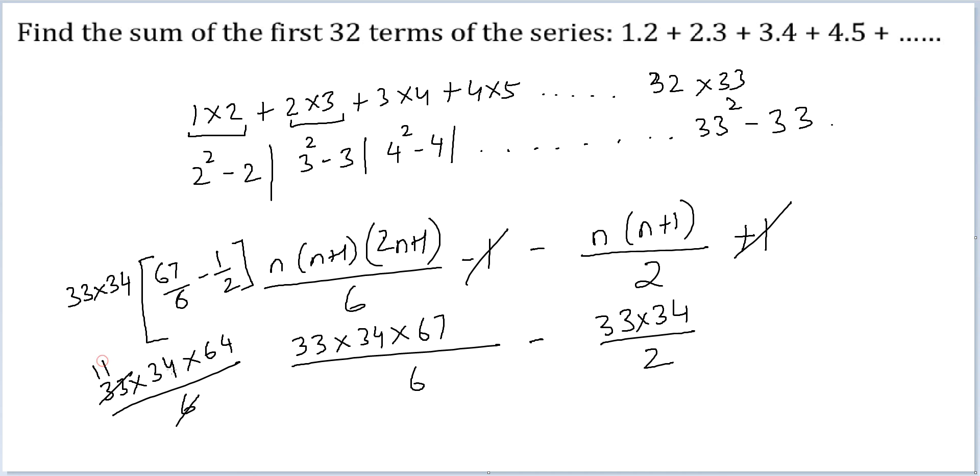Cancel, cancel, 11. Cancel, 17. So I get 11 into 17 into 64. This is simplified. 4 into 7 is 28.